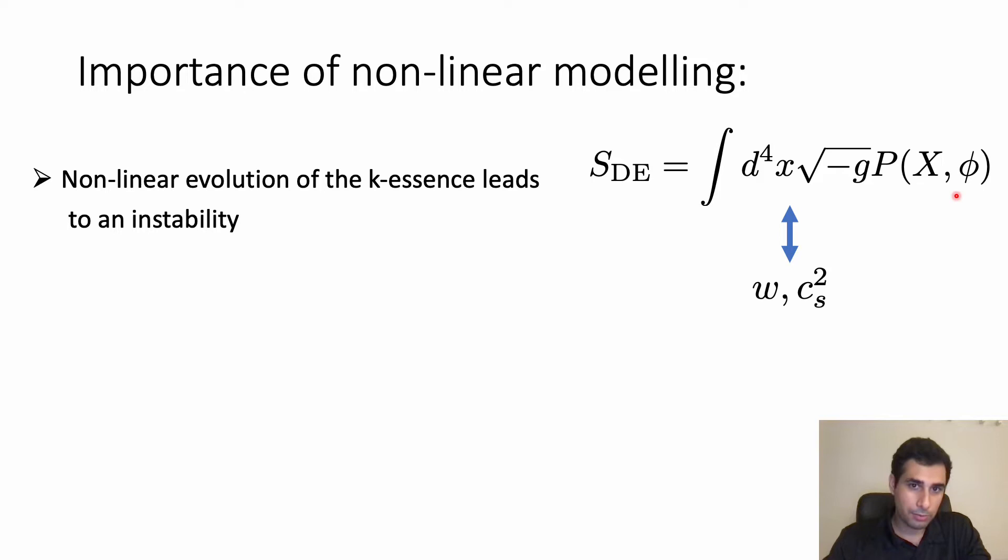However we can show that at cosmological scales these theories can be parametrized by two important parameters which are the equation of state w which tells us about the relation between pressure and density of the fluid, and the speed of sound squared which tells us how fast the perturbations propagate. And basically this is an effective theory description of these certain type of theories.